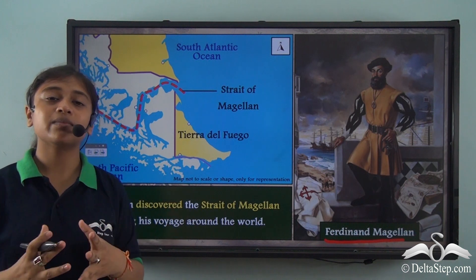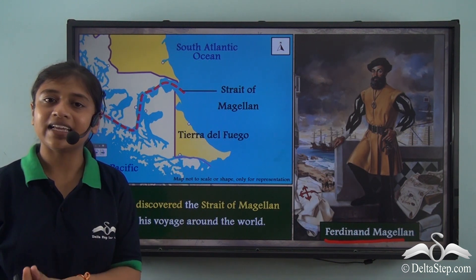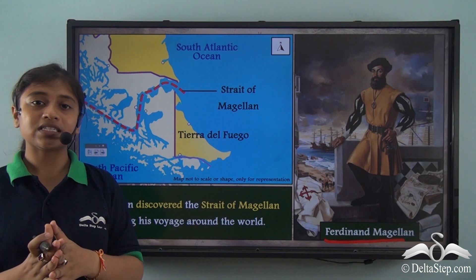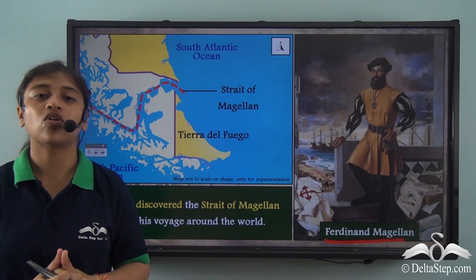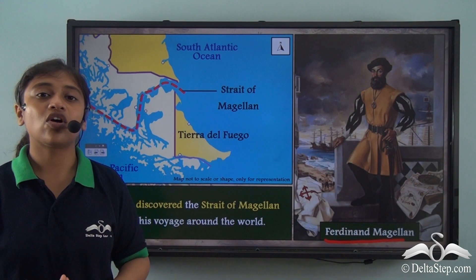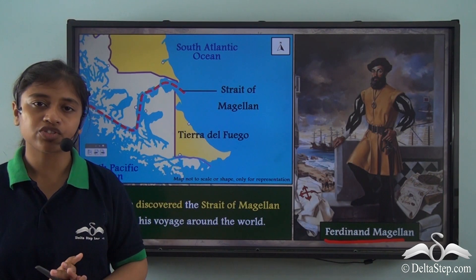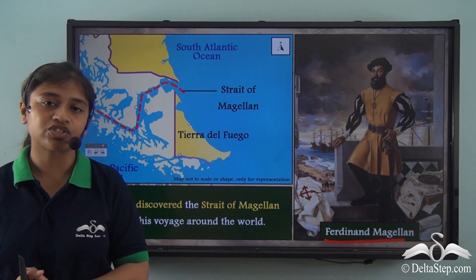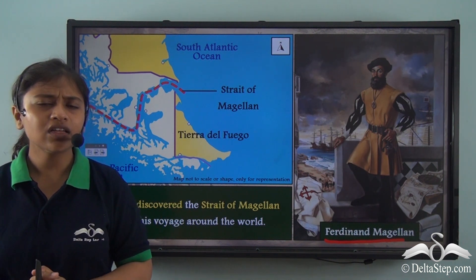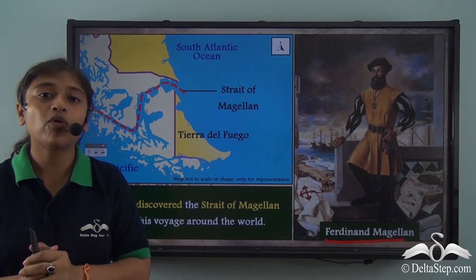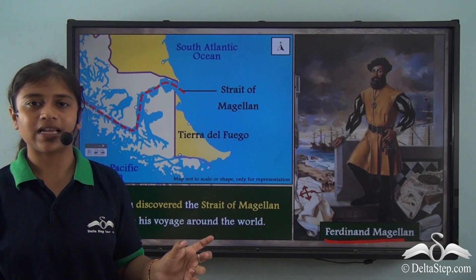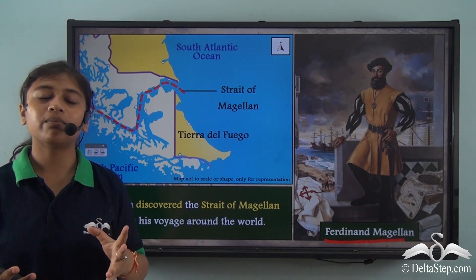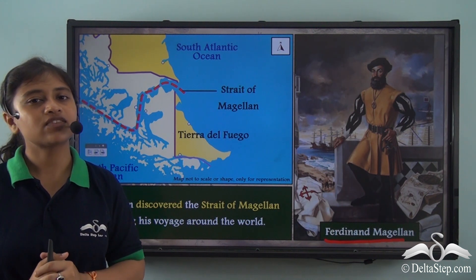In this lesson we understood that South America is a continent that lies entirely in the Western Hemisphere and almost entirely in the Southern Hemisphere. The continent is almost surrounded by water bodies on all sides, but is connected to North America at the northern portion through the Isthmus of Panama, and separated from Antarctica at the southern portion by the Drake Passage. There is also a natural passage at the southern portion — the Strait of Magellan — that joins the Atlantic Ocean and Pacific Ocean. In our next lesson we will learn more about the physical divisions of South America.